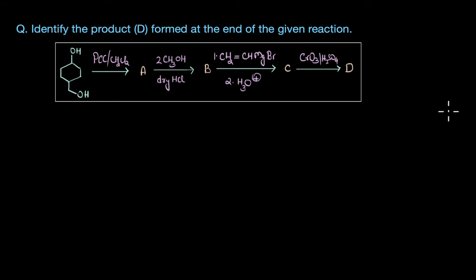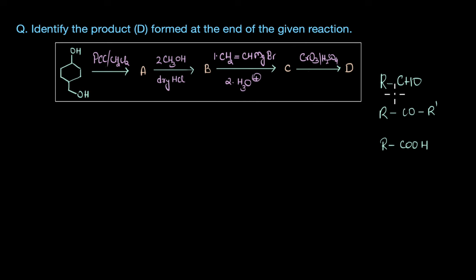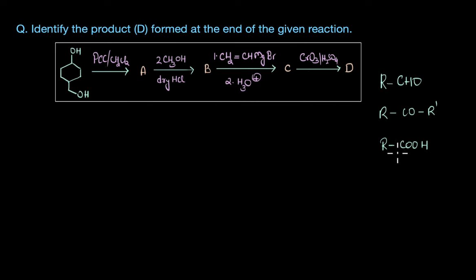We are now at the end of the aldehydes, ketones and carboxylic acids chapter. By now, we are familiar with the various ways in which these carbonyl compounds can be prepared. We have discussed their important chemical reactions and also the characteristic tests that are used to differentiate these compounds from one another.